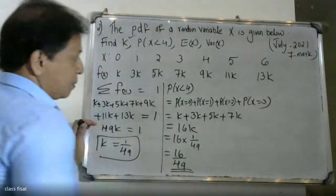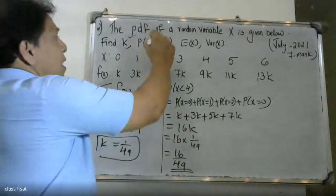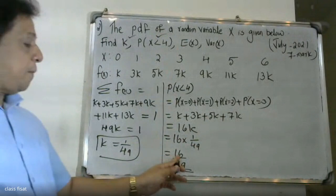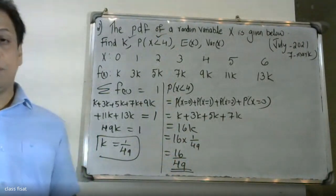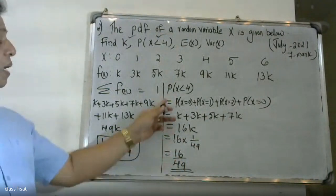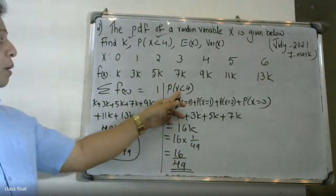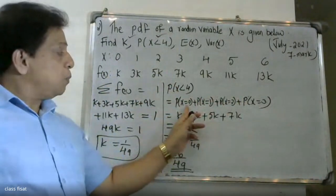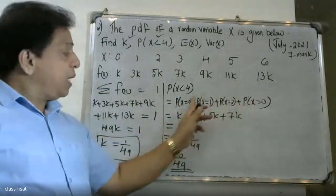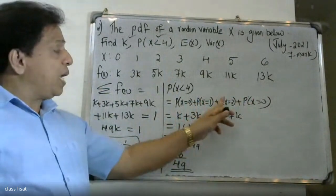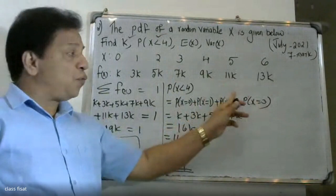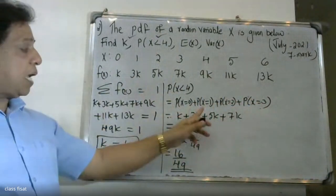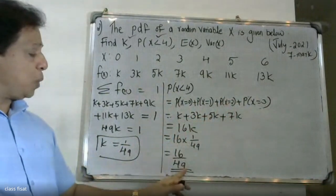For P(x < 4), x takes values 0, 1, 2, 3. Less than 4 goes up to x equal to 3. We substitute: k plus 3k plus 5k plus 7k, and then substitute the value of k to get the result.